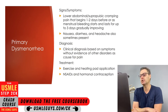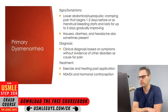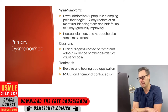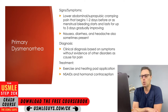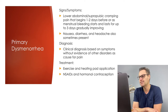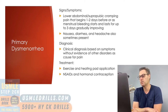Dysmenorrhea is a condition characterized by pain that starts one to two days before menstrual bleeding or with the initiation of menstrual bleeding, occurring typically in the lower abdomen, the suprapubic area, and is typically strongest in the midline. Patients will occasionally have pain in other areas like the back or the thigh, and the pain can range in severity from mild all the way up to very severe.